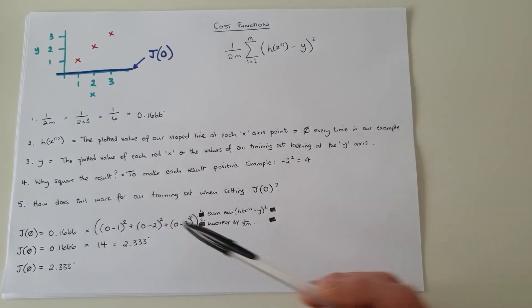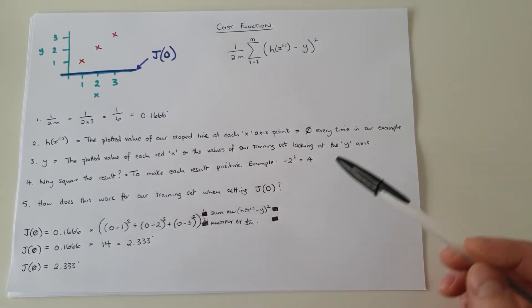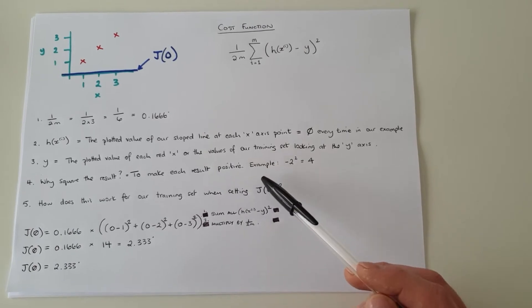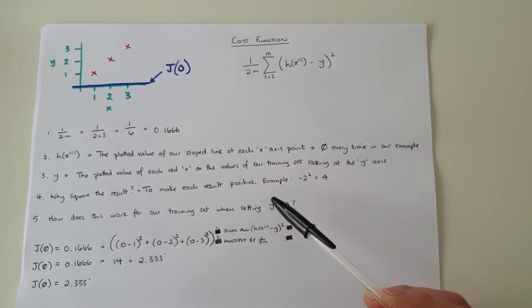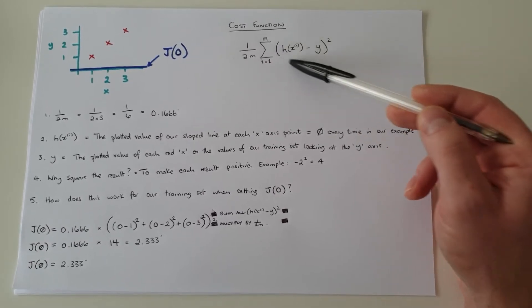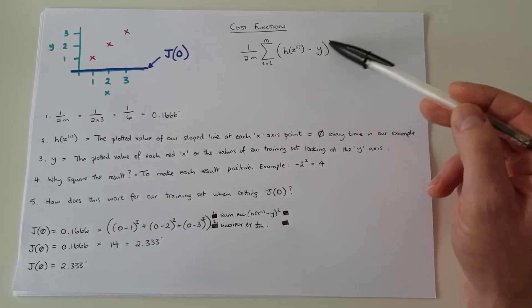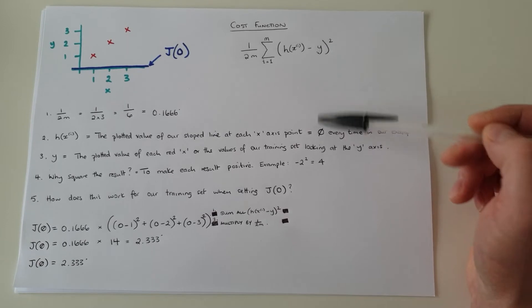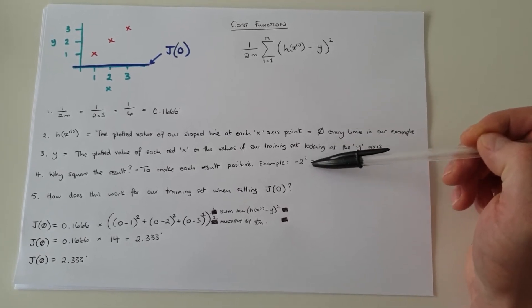And why do we square the result? We square the result to make sure that we've got a positive result for every single iteration. So even if we have this value here will be a negative value, if we square it, it will become a positive value. So if we add negative two squared equals four.